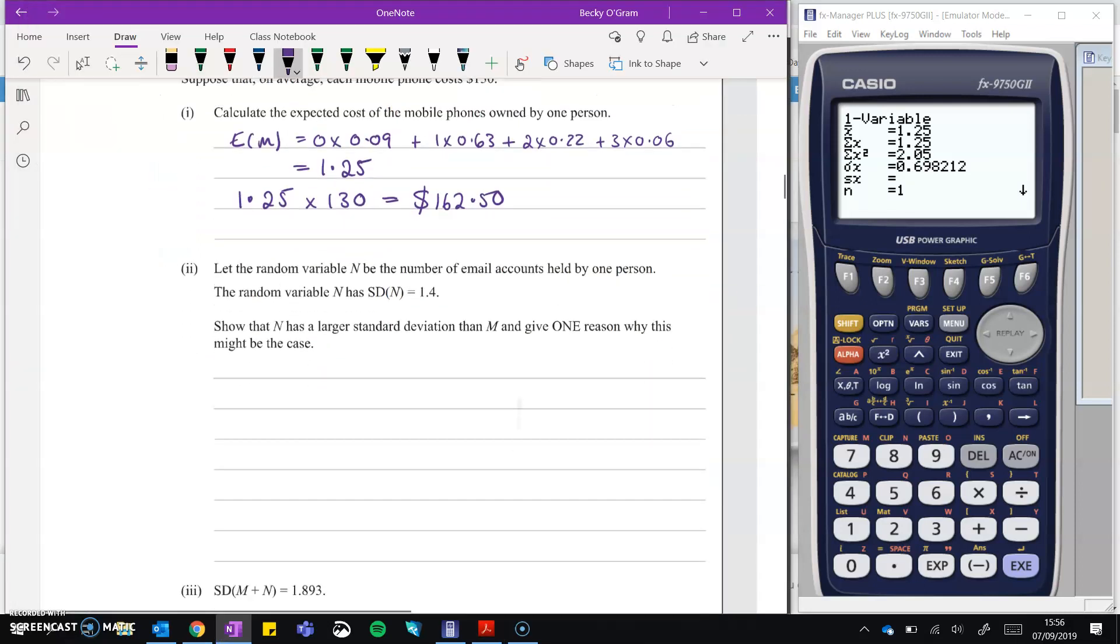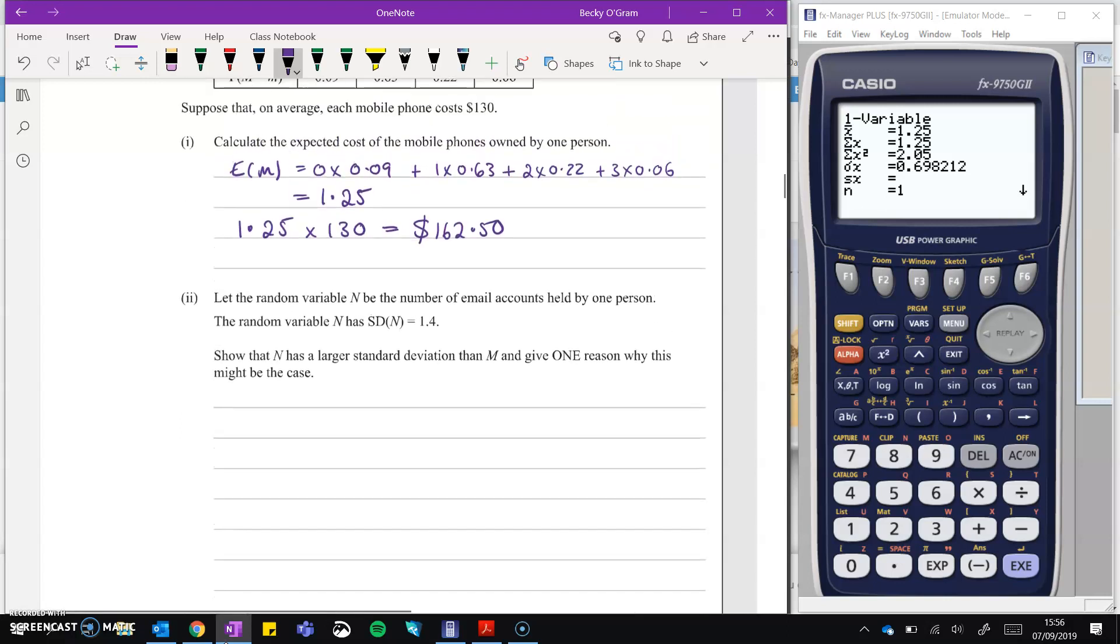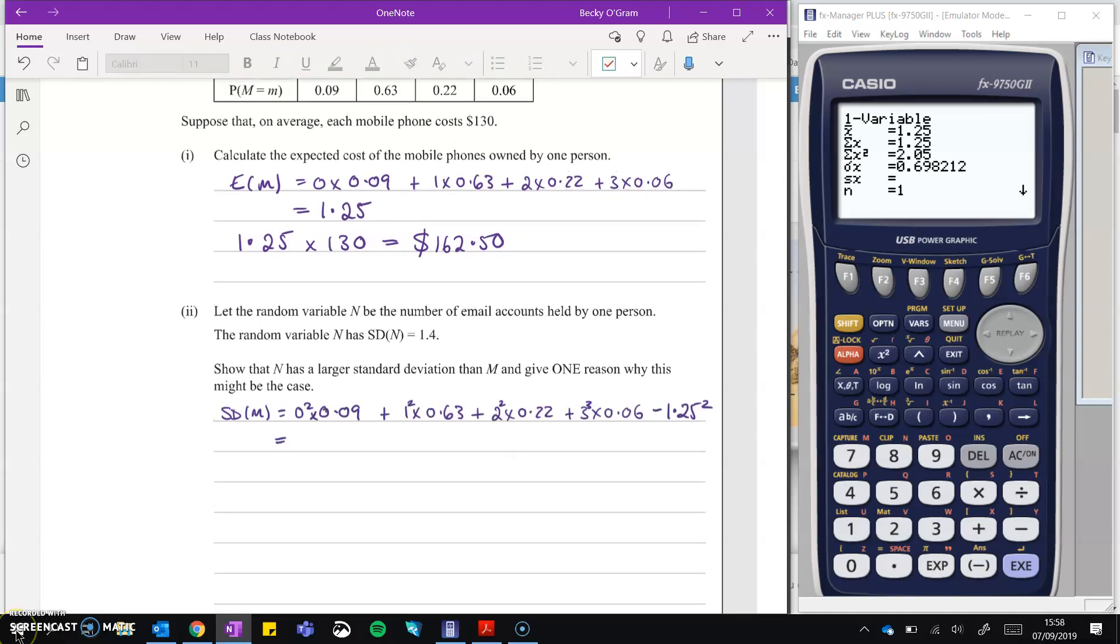Okay, back over to our question. Random variable N is the number of email accounts held by one person. And it's got a standard deviation of 1.4. That's how you read this. Show that N has a larger standard deviation than M. And give one reason why this might be the case. So we need to go back and work out the standard deviation of M. Which, if you're doing it by hand, is going to look like this. But we can actually read it straight off of our graphics calculator. We've got all those values in there already. So it's right here at the sigma X. That means the standard deviation. So we've got 0.698212. So 0.698212 is smaller than 1.4. Therefore the standard deviation of N is bigger.